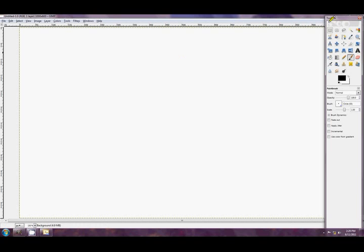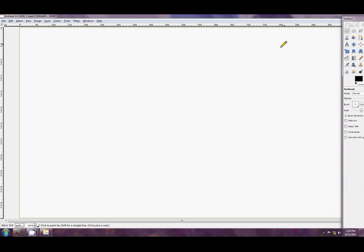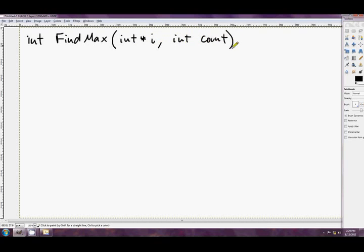So for this shoot, I've decided on a really basic algorithm. What we're going to do is something like this: int FindMax, and it's going to take int star i, we'll call it, and also int count. Okay, so we're just going to write a little function in assembly to find the maximum integer in an integer array. As simple as that.